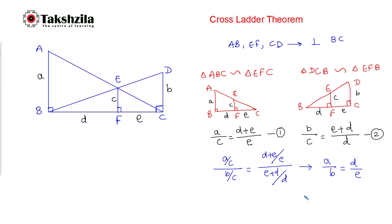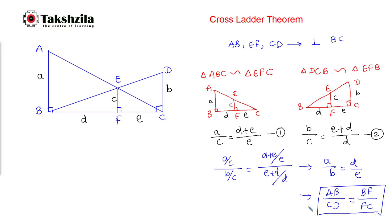So the result here is that the ratio of the length of AB to the length of CD is the same as the ratio of D to E — that is, A divided by B equals D divided by E. Now let's look at the next concept.